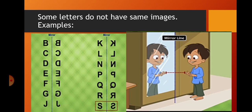Some letters do not have the same image. Just like examples B, C, D, they are in the reverse order. So if you can, what is the difference in that?